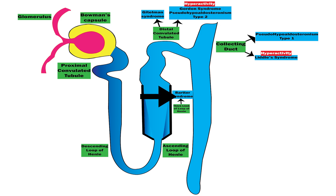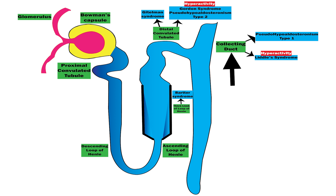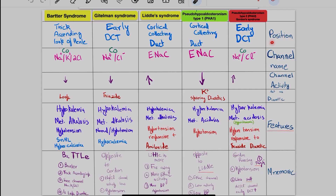Looking at the diagram: if we have a defect in the thick ascending limb of the loop of Henle, we have Bartter syndrome; if in the distal convoluted tubule, we can have Gitelman syndrome or Gordon syndrome (Pseudo-Hypoaldosteronism type 2, due to hyperactivity); and in the cortical collecting duct, we can have Pseudo-Hypoaldosteronism type 1 or Liddle syndrome. To understand these syndromes better, we divide them into 6 main features: position, channel name, channel activity, action of diuretic, clinical features, and mnemonic.